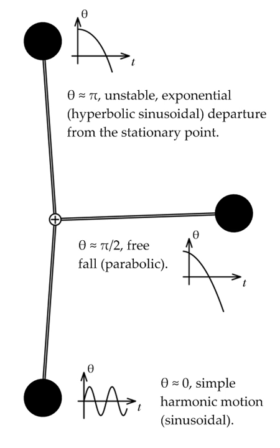As nonlinear dynamical equations are difficult to solve, nonlinear systems are commonly approximated by linear equations. This works well up to some accuracy and some range for the input values, but some interesting phenomena such as solitons, chaos, and singularities are hidden by linearization.